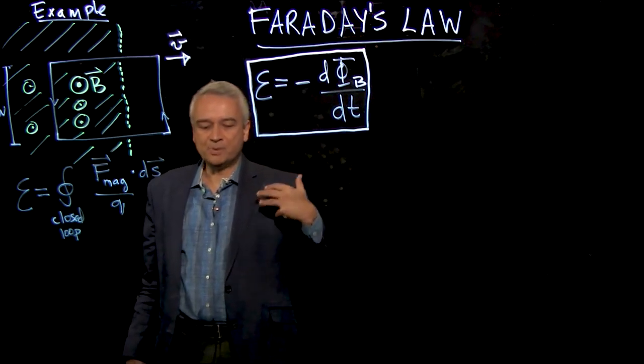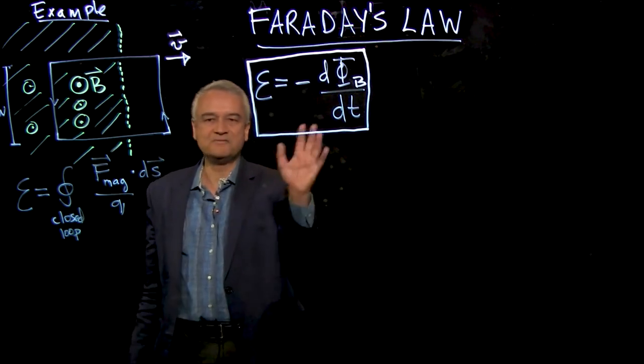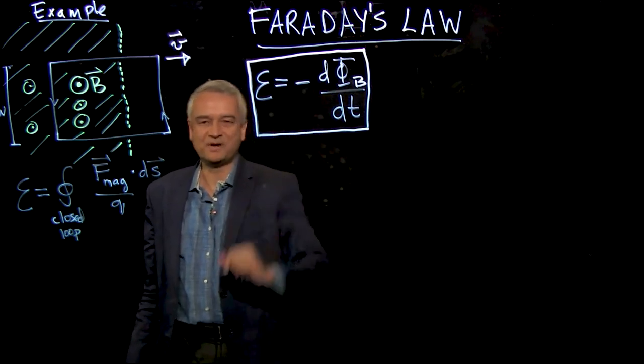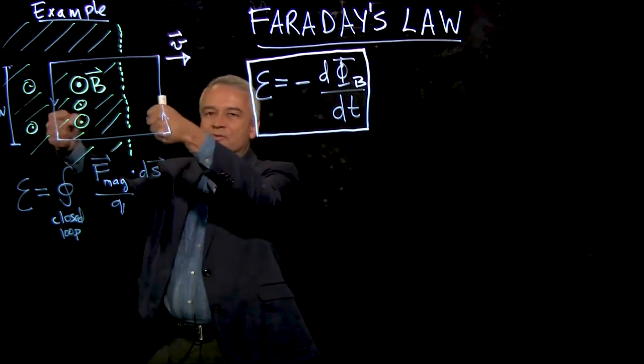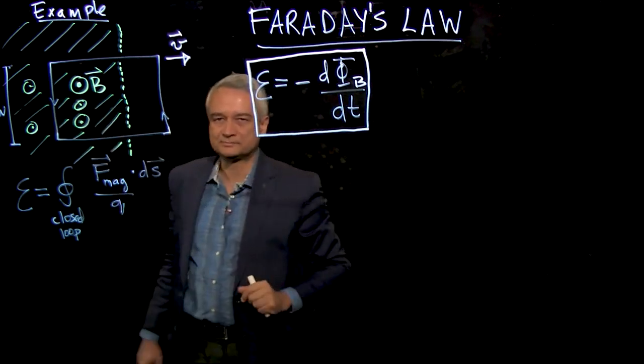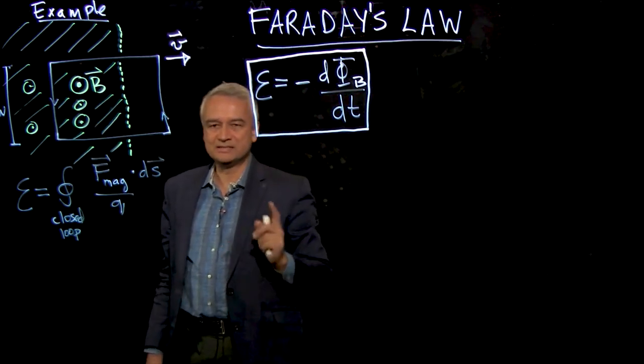So what pushed Einstein to his discovery of relativity was in fact this very basic feature of Faraday's law that the EMF you get is the same whether the loop is moving or the field is moving. That was part of what motivated Einstein to discover relativity.